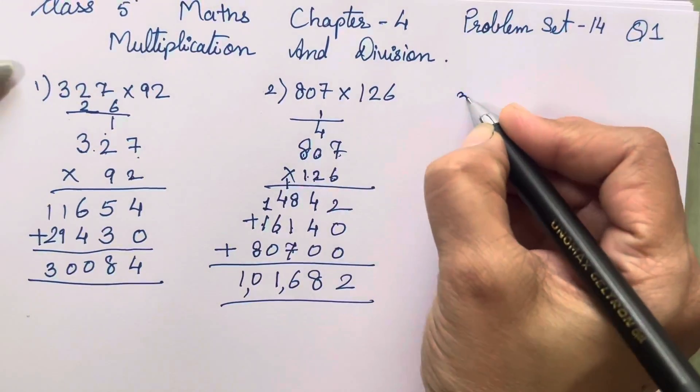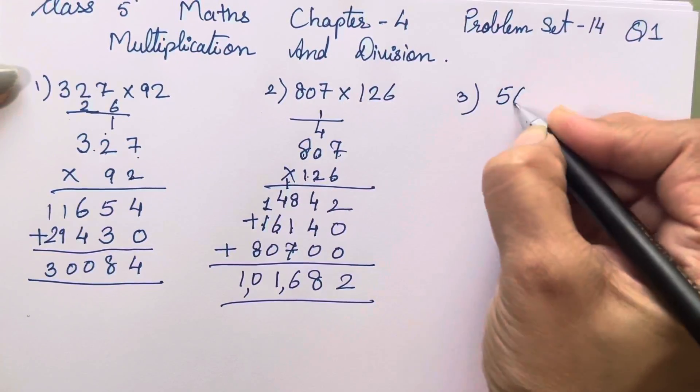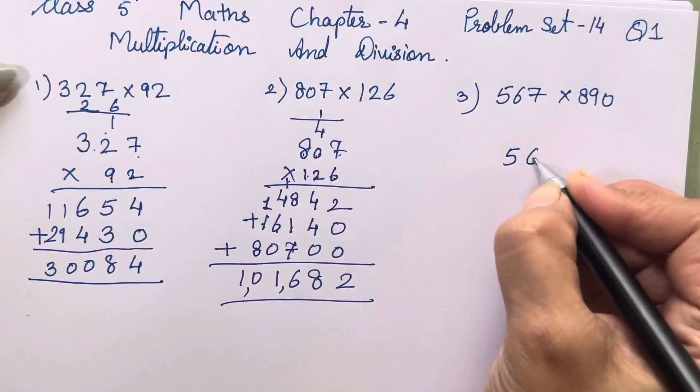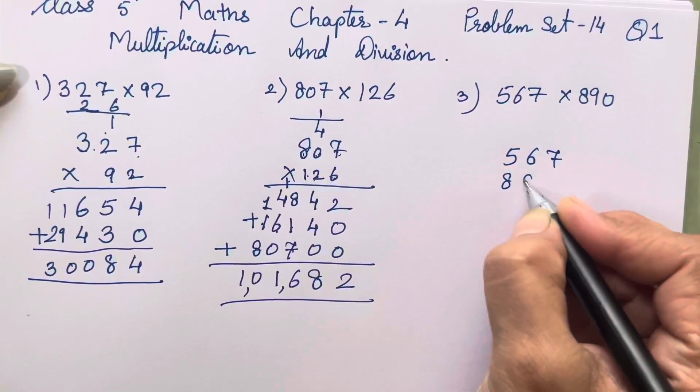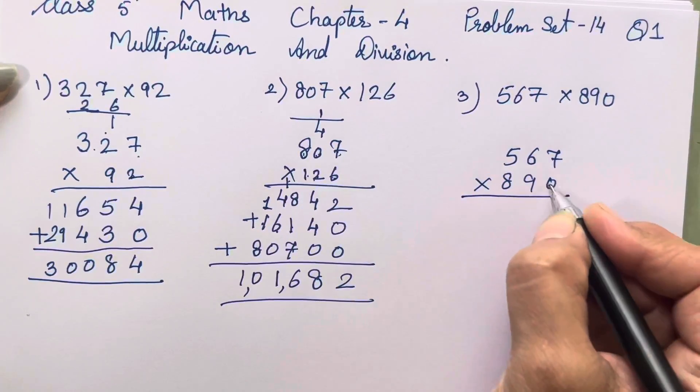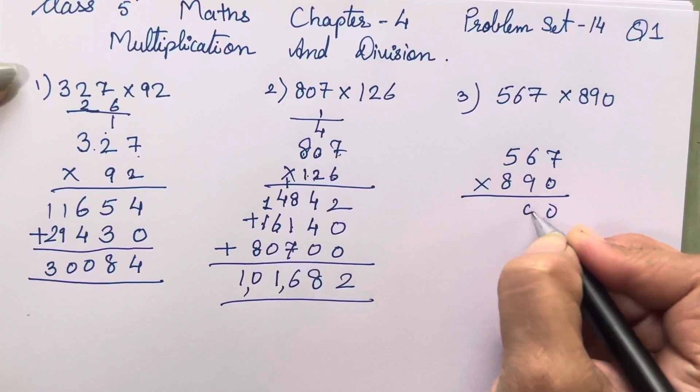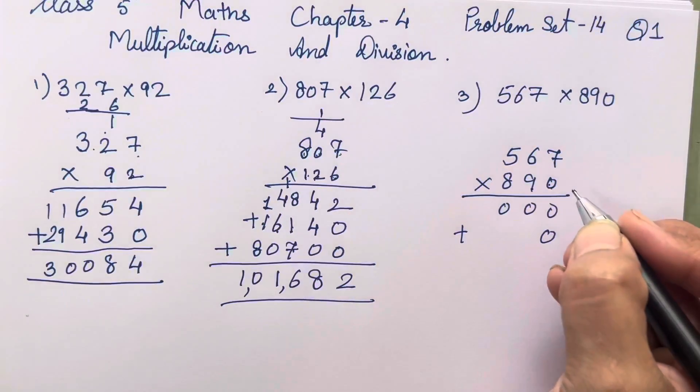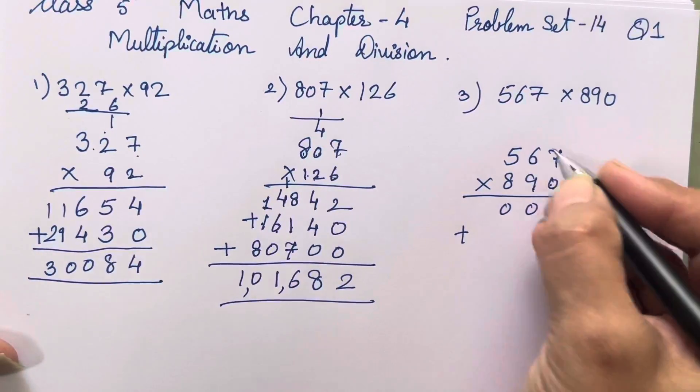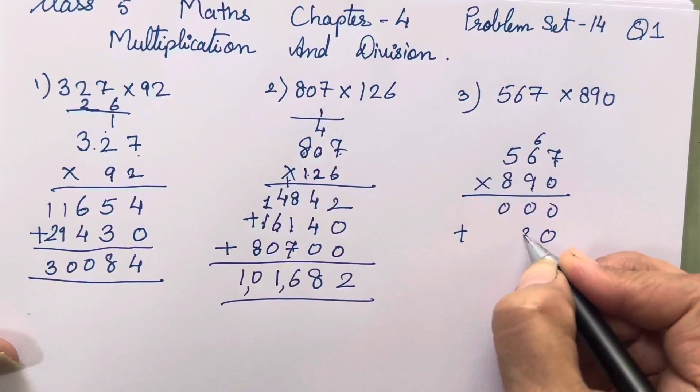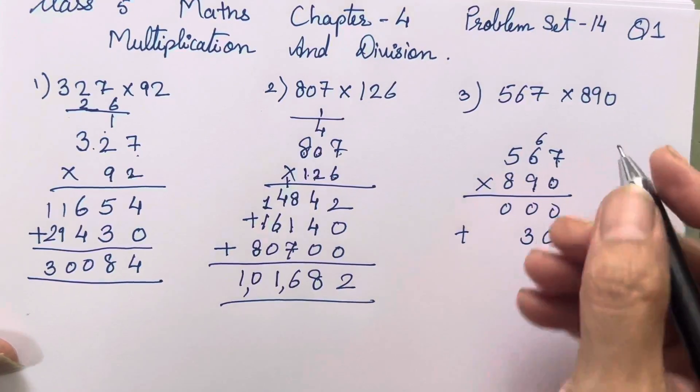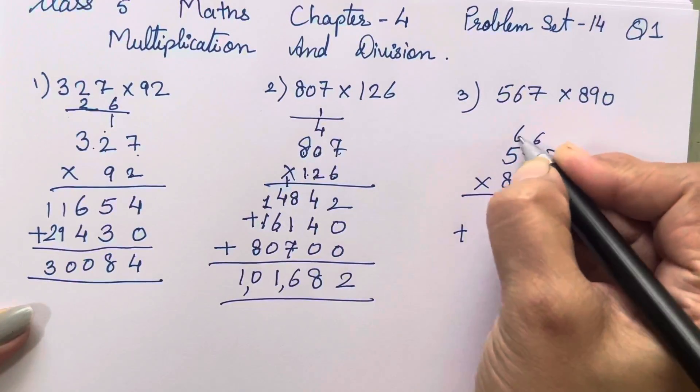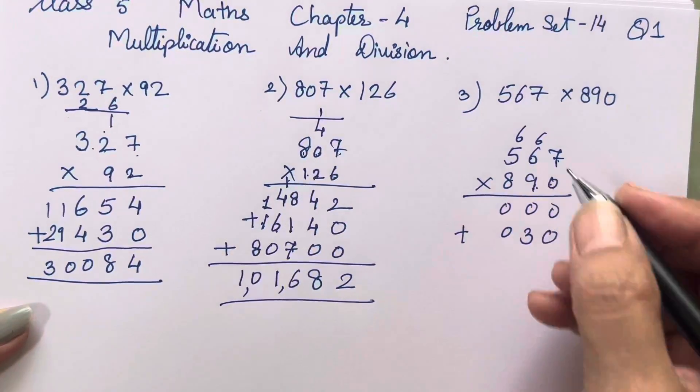Let's move on to the third sum. That is 567 into 890. So 0 sevens are 0, 0 six is 0, 0 five is 0. Plus 0 because we have taken the second digit. So 9 sevens are 63. 9 sixes are 54, 55, 56, 57, 58, 59, 60.